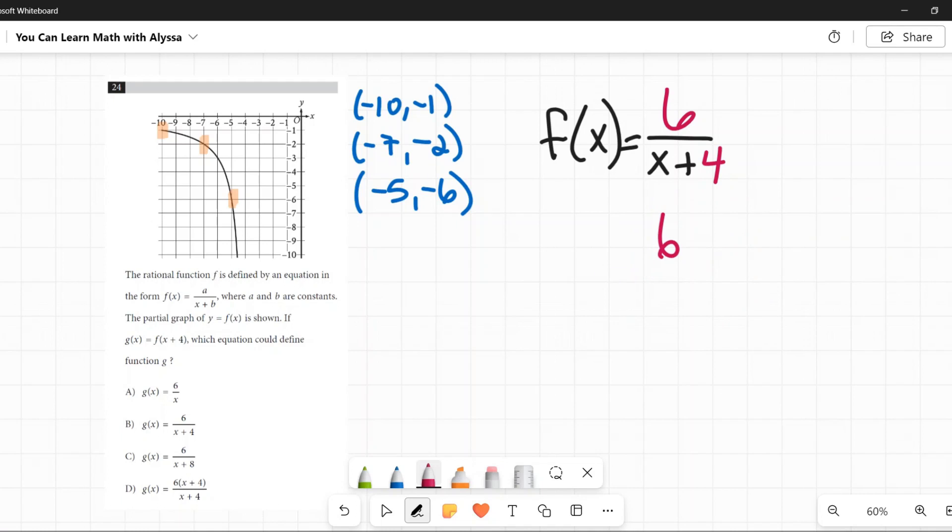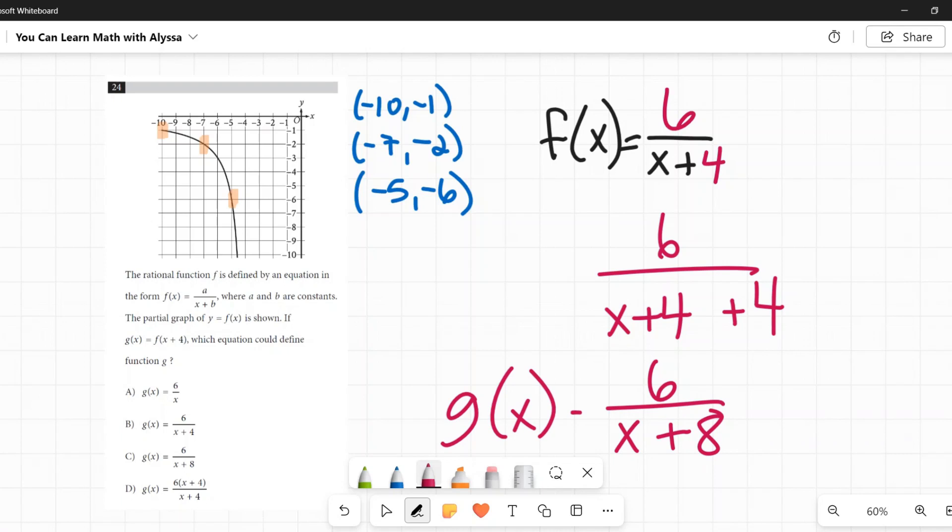And so that will give me 6 over, plug in that x plus 4, wherever there's an x, there's only 1x plus 4. Now, because these are all just being added, I can now remove those parentheses. x plus 4 plus 4, I can combine those. And now it is x plus 8. 6 over x plus 8. That is what g of x is. And that is c. g of x is 6 over x plus 8.